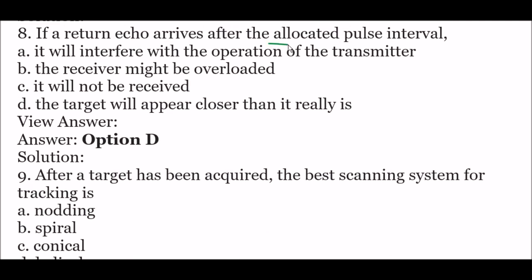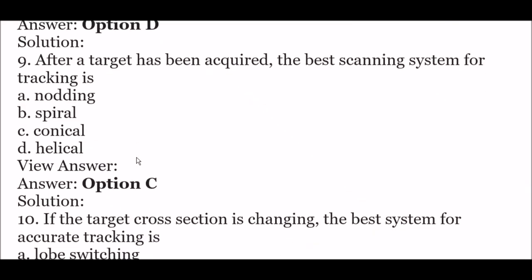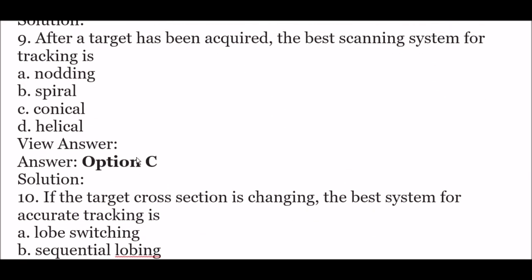Next question: if a return echo arrives after the allocated pulse interval — option A: it will interfere with the operation of the transmitter, option B: the receiver might be overloaded, option C: it will not be received, option D: the target will appear closer than it really is. The right answer is option D — the target will appear closer than it really is.